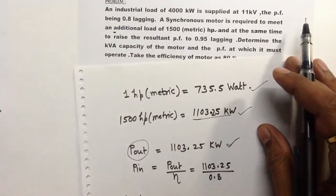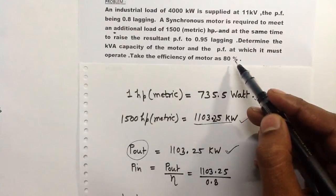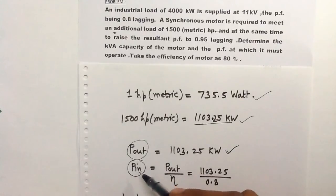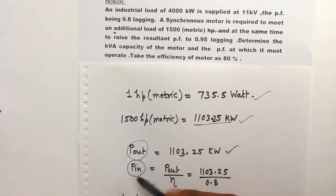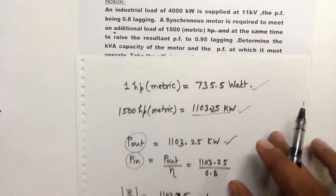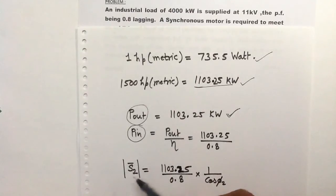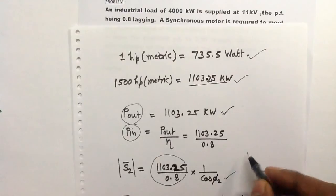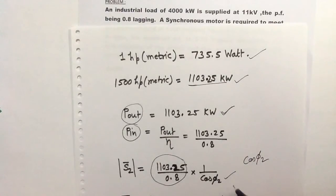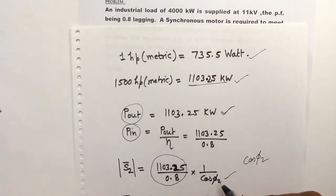The efficiency of the motor is 80%, so the real power input to the synchronous motor equals power output divided by efficiency, which gives 1379.06 kW. To write the magnitude of the complex power drawn by the synchronous motor, divide the real power input by the power factor. Let the power factor of the synchronous motor be cos phi2, so the magnitude of S2 equals 1379.06 divided by cos phi2.